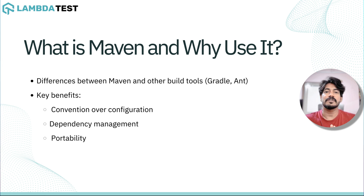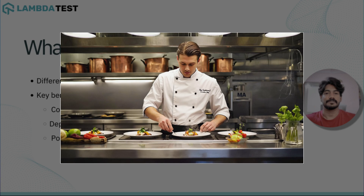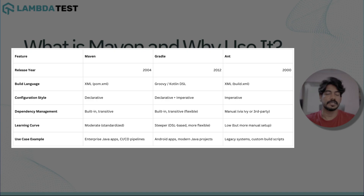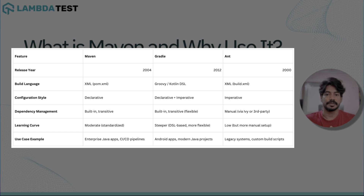Think of it like this: if a Java project were a recipe, Maven would be the chef that knows exactly what ingredients to fetch, how to mix them, and when to serve them. Maven was introduced in 2004, whereas Ant was introduced in 2000 and is considered outdated, used only in a few legacy projects. Maven uses XML as its build language with a declarative configuration style and has a built-in transitive dependency manager and lifecycle. Gradle was introduced in 2012 and is more advanced, mostly used in Java projects particularly for Android development where Kotlin is used.